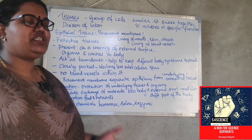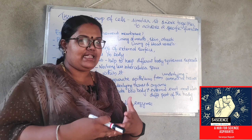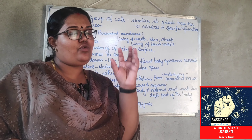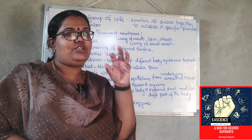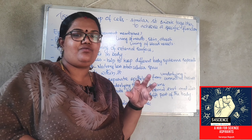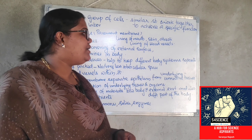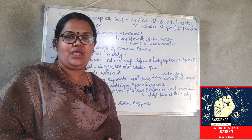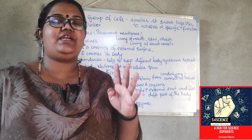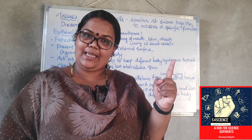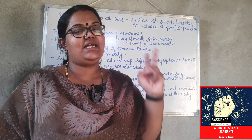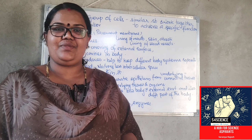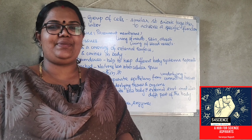So first we understand what tissue is — it is a group of cells. Here we are going to learn about the details of animal tissue. There are mainly 4 different animal tissues: the first one is epithelial tissue, the second is connective tissue, the third is muscular tissue and the fourth is nervous tissue. We will go into detail of each tissue. First, we are going to learn about epithelial tissue.